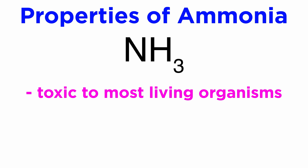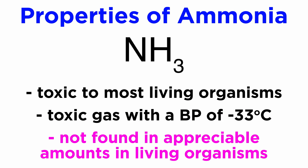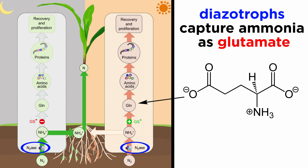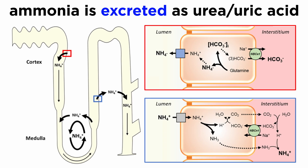Ammonia is actually a very toxic molecule to most living organisms. It is a toxic gas under ambient conditions with a boiling point of negative 33 degrees Celsius, and it is not found in appreciable amounts in life. Diazotrophs capture ammonia as glutamate, and this storage reaction forms the basis of amino acid and nucleoside synthesis. Once introduced into glutamate, the amino group can be exchanged with a number of substrates to effectively transfer ammonia using enzymatic reactions.